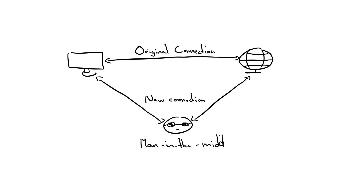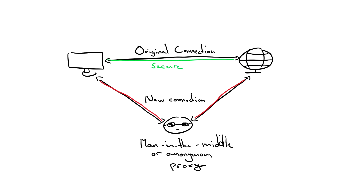The malicious user intercepts, sends, and receives data meant for somebody else — or not meant to be sent at all — without either outside party knowing until it's already too late. Public Wi-Fi networks are the most likely to be used during a man in the middle attack because they usually are less secure than private internet connections.